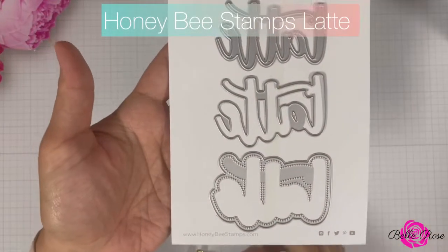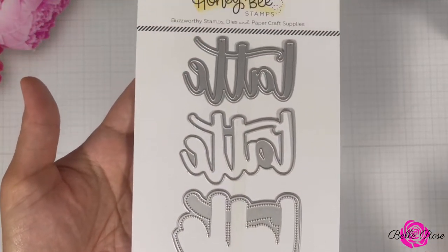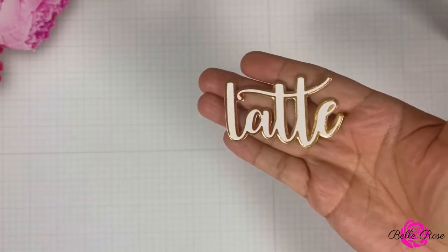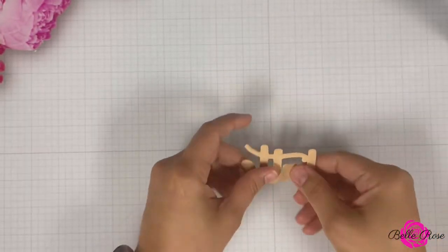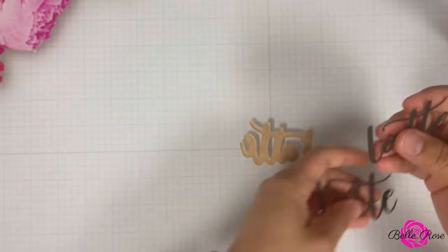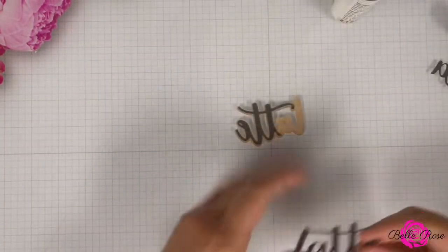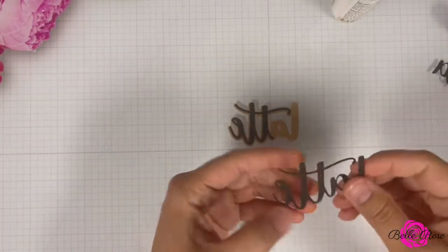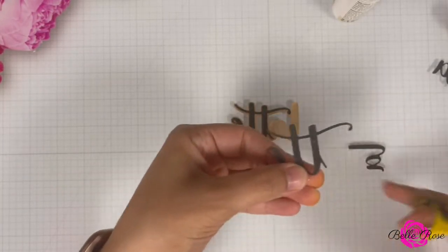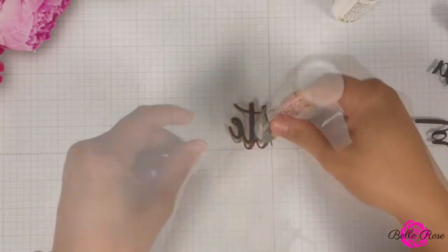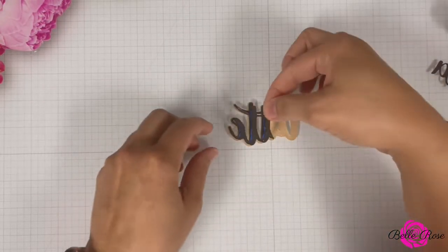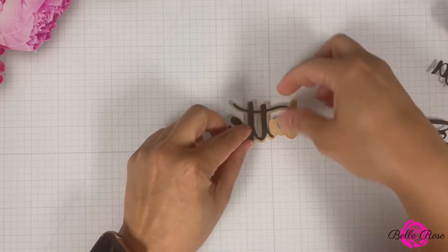Next, I'm going to bring in Honey Bee Stamps Latte Die Set. I did die cut and assemble the latte sentiment off camera. I cut out one layer of white cardstock and then the shadow using gold cardstock. I also decided to die cut the sentiment out of black cardstock. I already adhered the first layer, but as you see right here, I'm going to remove the L and the A and just adhere the TTE to the back of latte. There is a reason why I did this, so stay tuned.